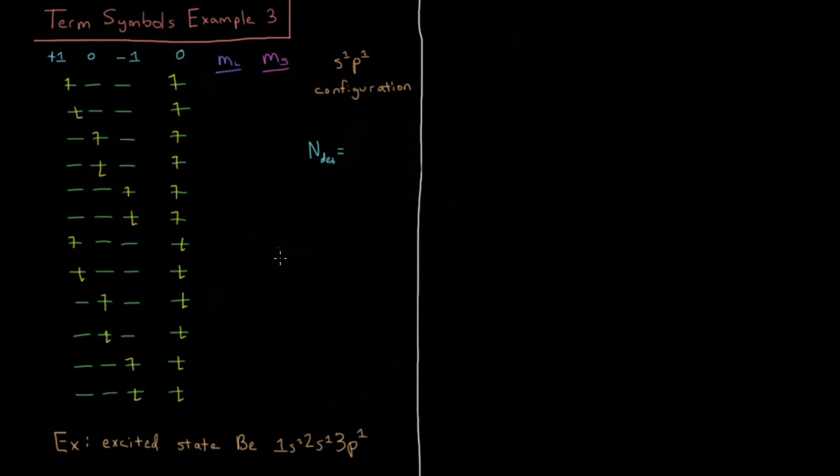So what would be our term symbols in that example? To calculate the number of determinants we're expecting to have we do it the same way we would if we had a single partially filled subshell but then we take all of those results and multiply them together at the end. How many different ways can we arrange one electron into 6 spin orbitals in our p subshell? That would be 6 choose 1 which is going to be 6.